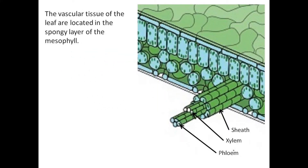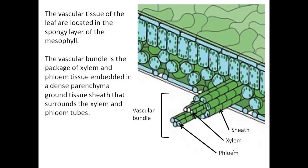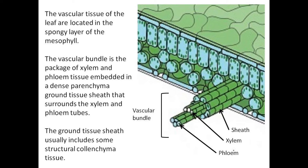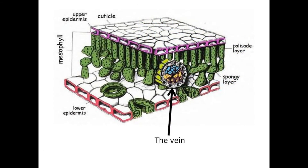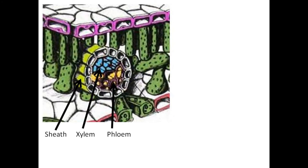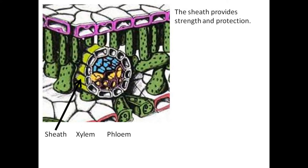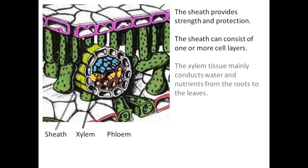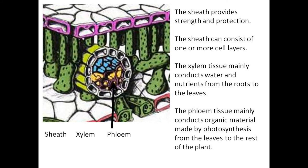Mixed in with the spongy layer are veins containing the vascular transport tissue. The vascular tissue of the leaf is located in the spongy layer of the mesophyll. The vascular bundle is the package of xylem and phloem tissue embedded in a dense parenchyma ground tissue sheath that surrounds the xylem and phloem tubes. The ground tissue sheath usually includes some structural colenchyma tissue, and the sheath provides strength and protection. The sheath can consist of one or more cell layers. The xylem tissue mainly conducts water and nutrients from the roots to the leaves, and the phloem tissue mainly conducts organic material made by photosynthesis from the leaves to the rest of the plant.